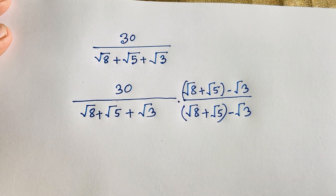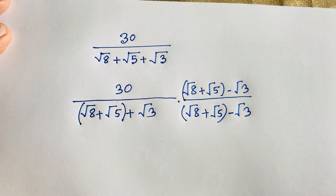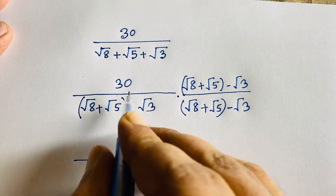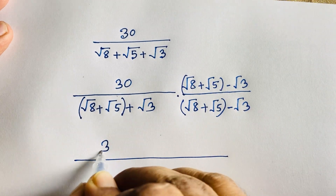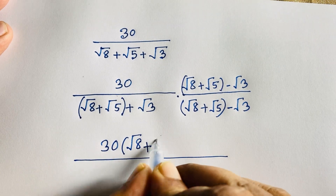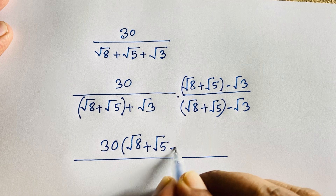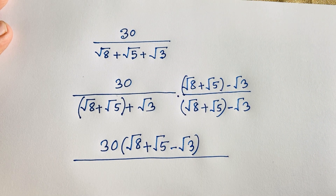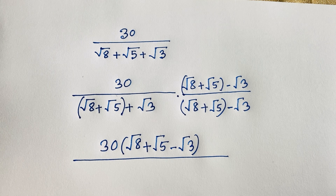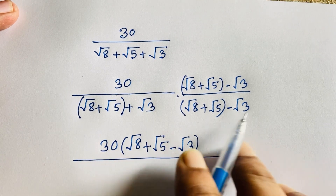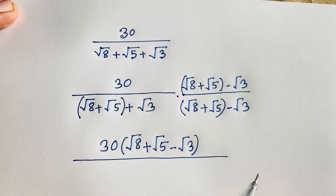Now look at the denominator: square root 8 plus square root 5 — let's call this 'a', and square root 3 will be 'b'. We know that (a + b)(a − b) equals a squared minus b squared.